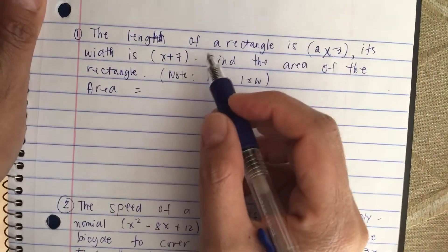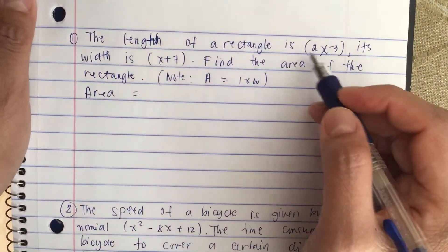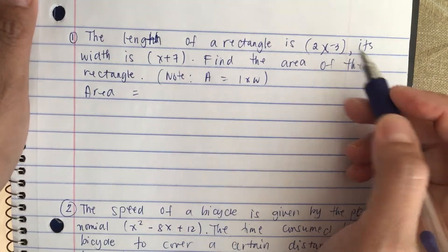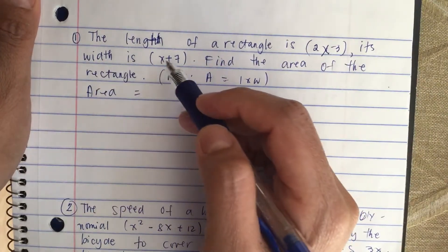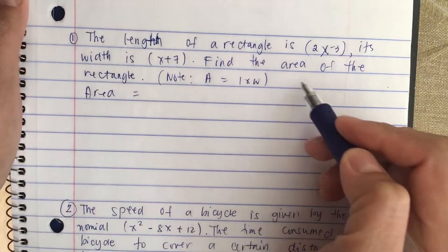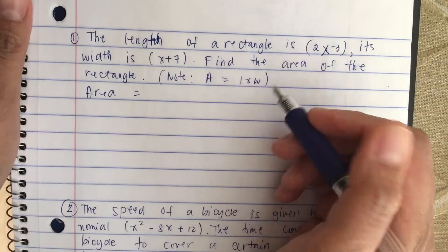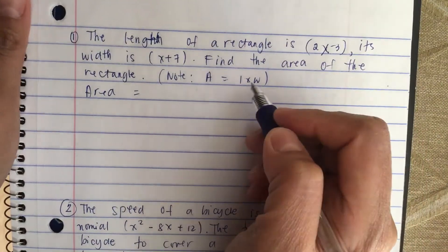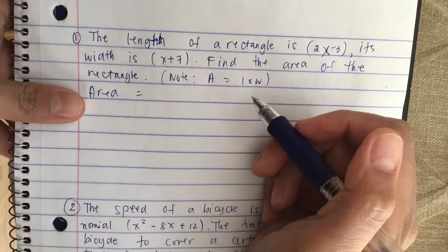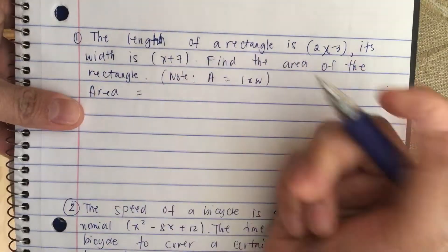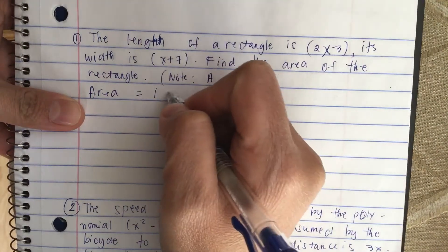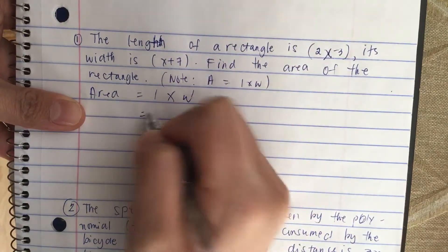The length of a rectangle is 2x minus 3, its width is x plus 7. Find the area of the rectangle. Area is equal to length times width, so the length is 2x minus 3 and the width is x plus 7.